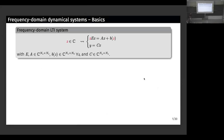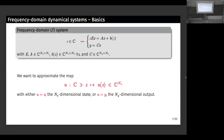The prototypical example of problems we're trying to consider is a frequency domain application, like a frequency domain linear time invariant system. This comes from the Laplace or Fourier transform of a dynamical system. We have a scalar complex parameter z that appears in the state equation. X is the state of the system, and y is a collection of outputs — usually lower dimensional than the state. The question is: how can we get an approximation of the map u that maps frequency z to the quantity u(z)?